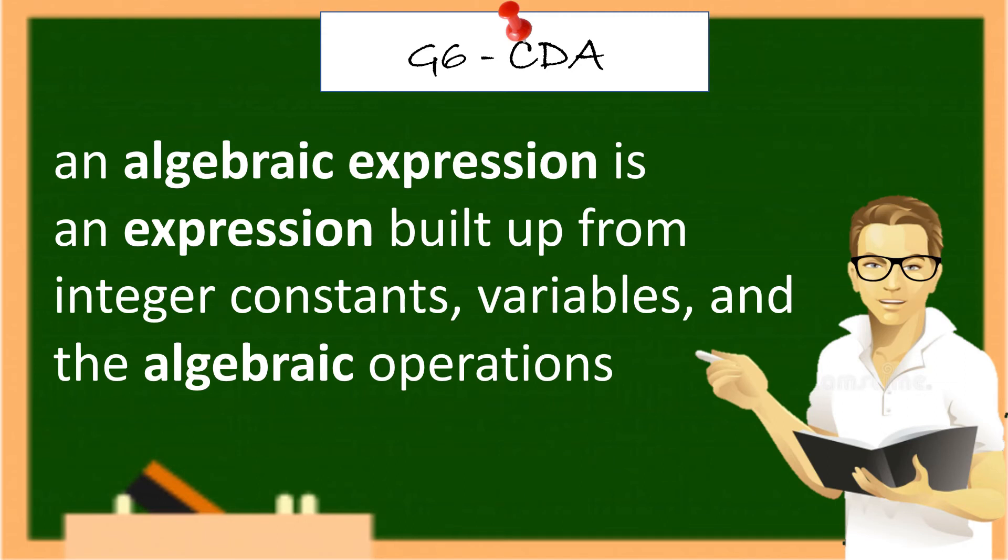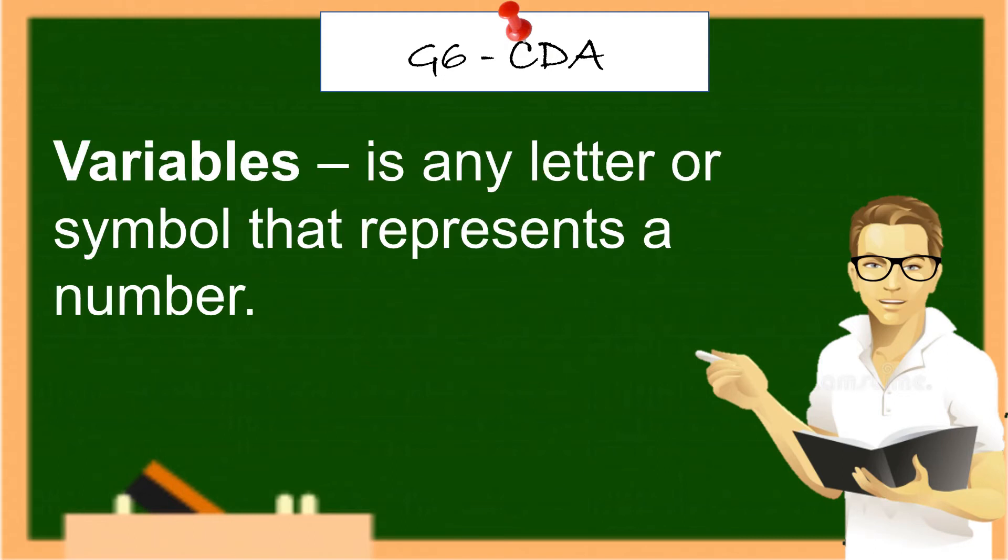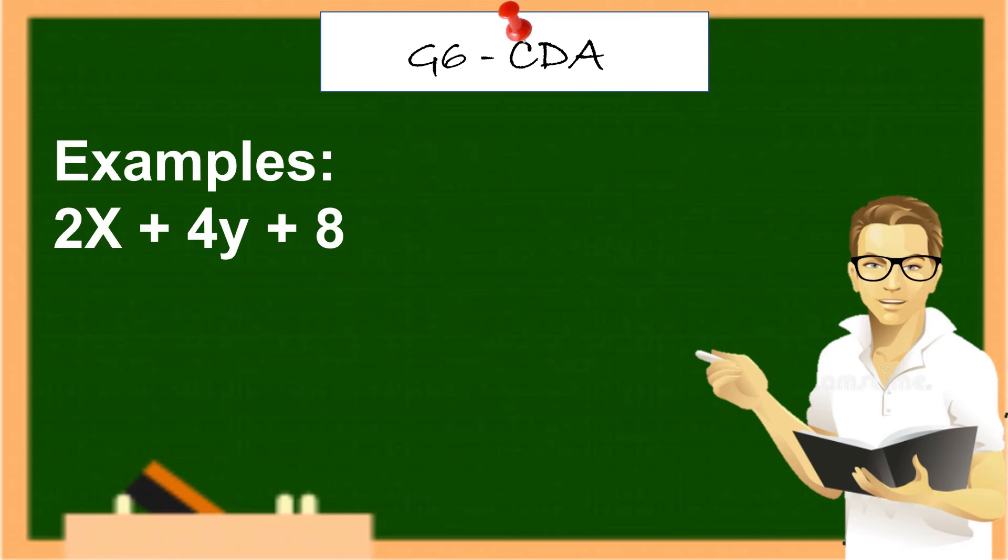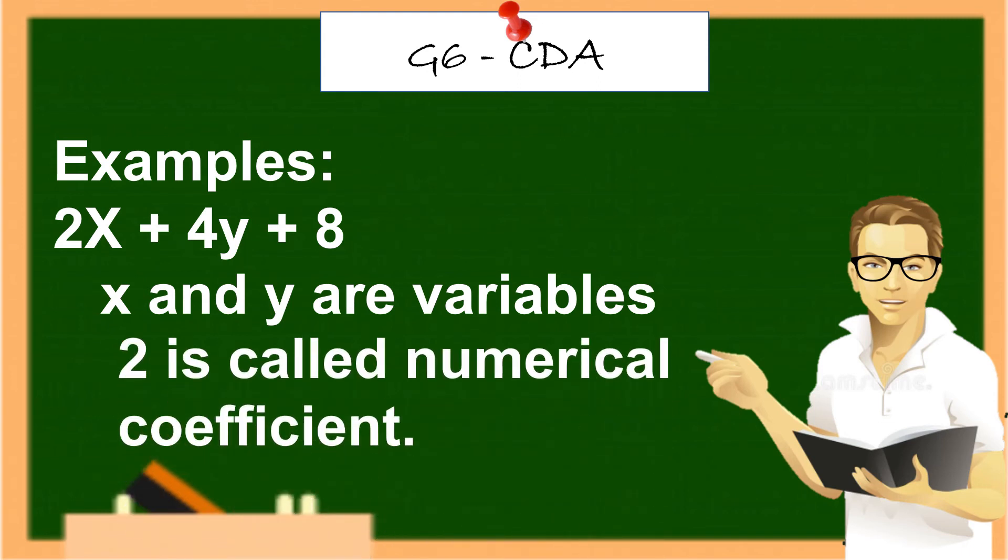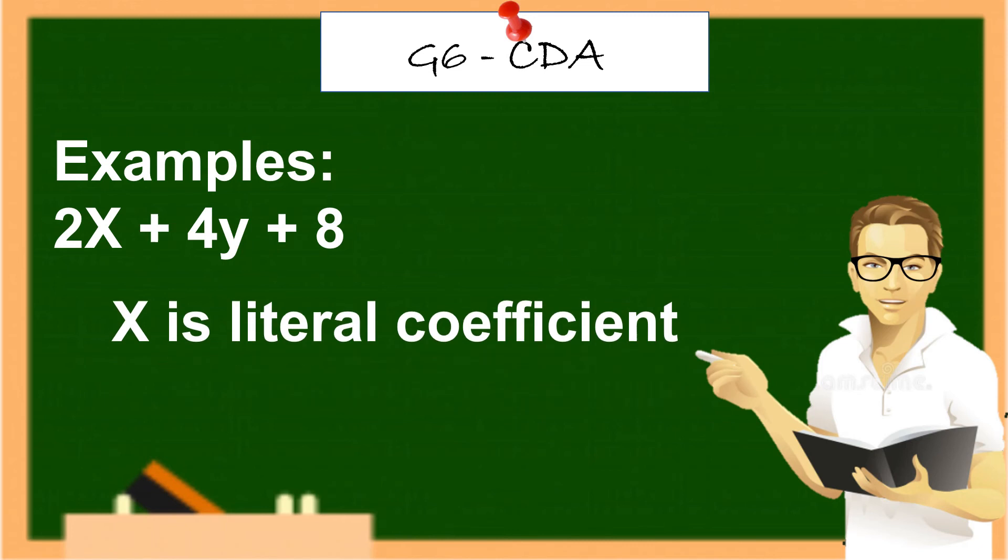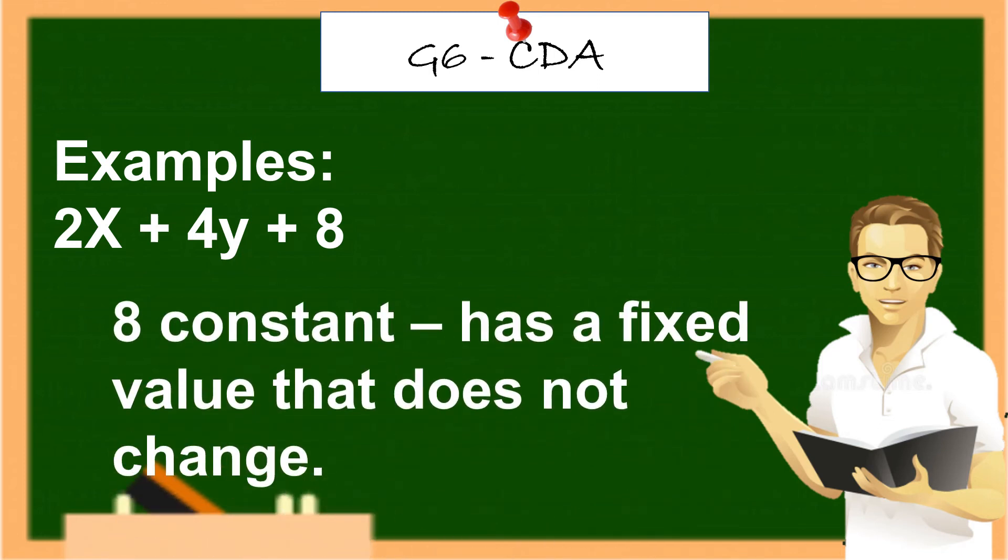An algebraic expression is an expression built up from integer constants, variables, and the algebraic operations. Variables is any letter or symbol that represents a number. Examples, 2x plus 4y plus 8. X and y are variables. 2 is called numerical coefficient. 2x is literal coefficient. And 8, constant, has a fixed value that does not change.